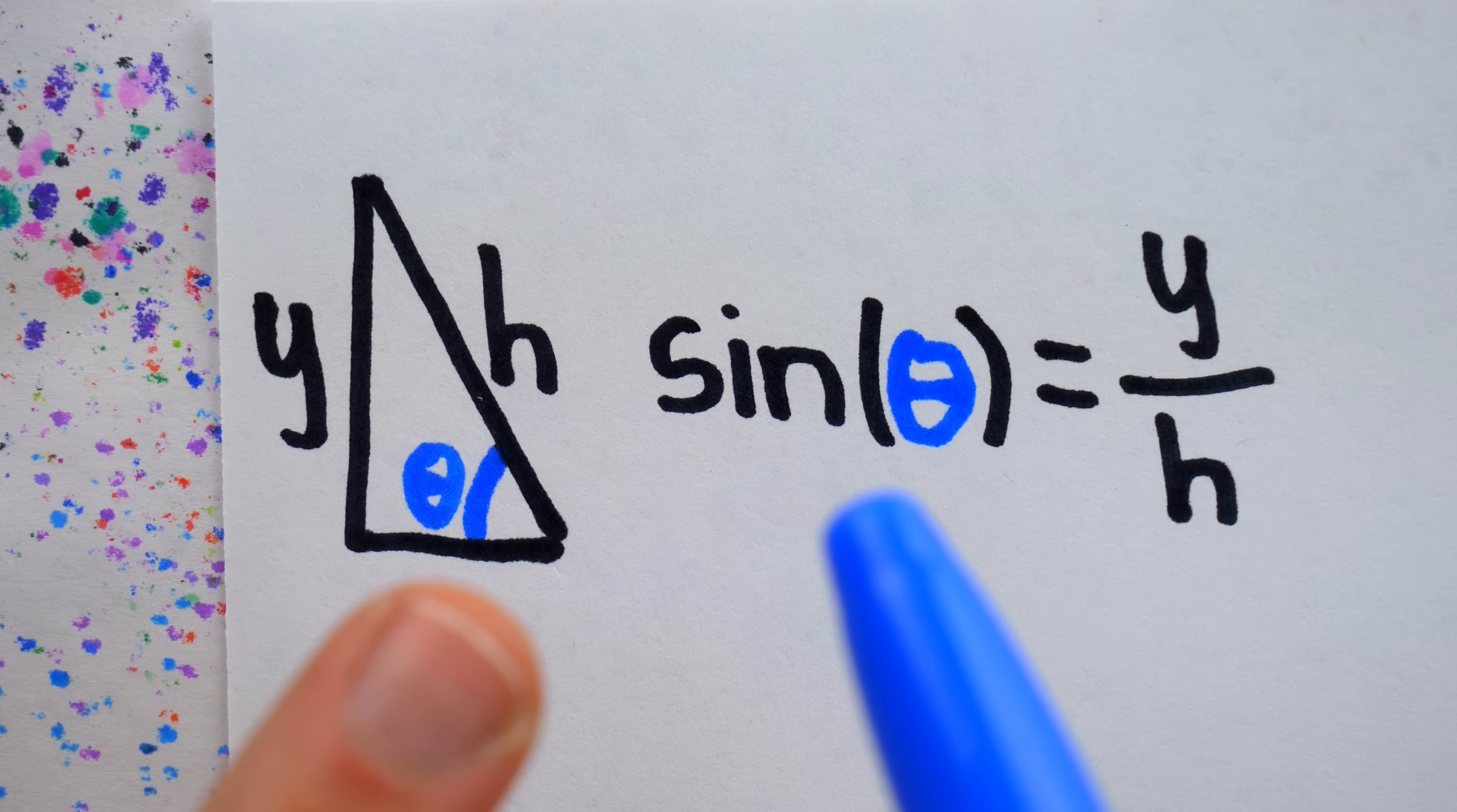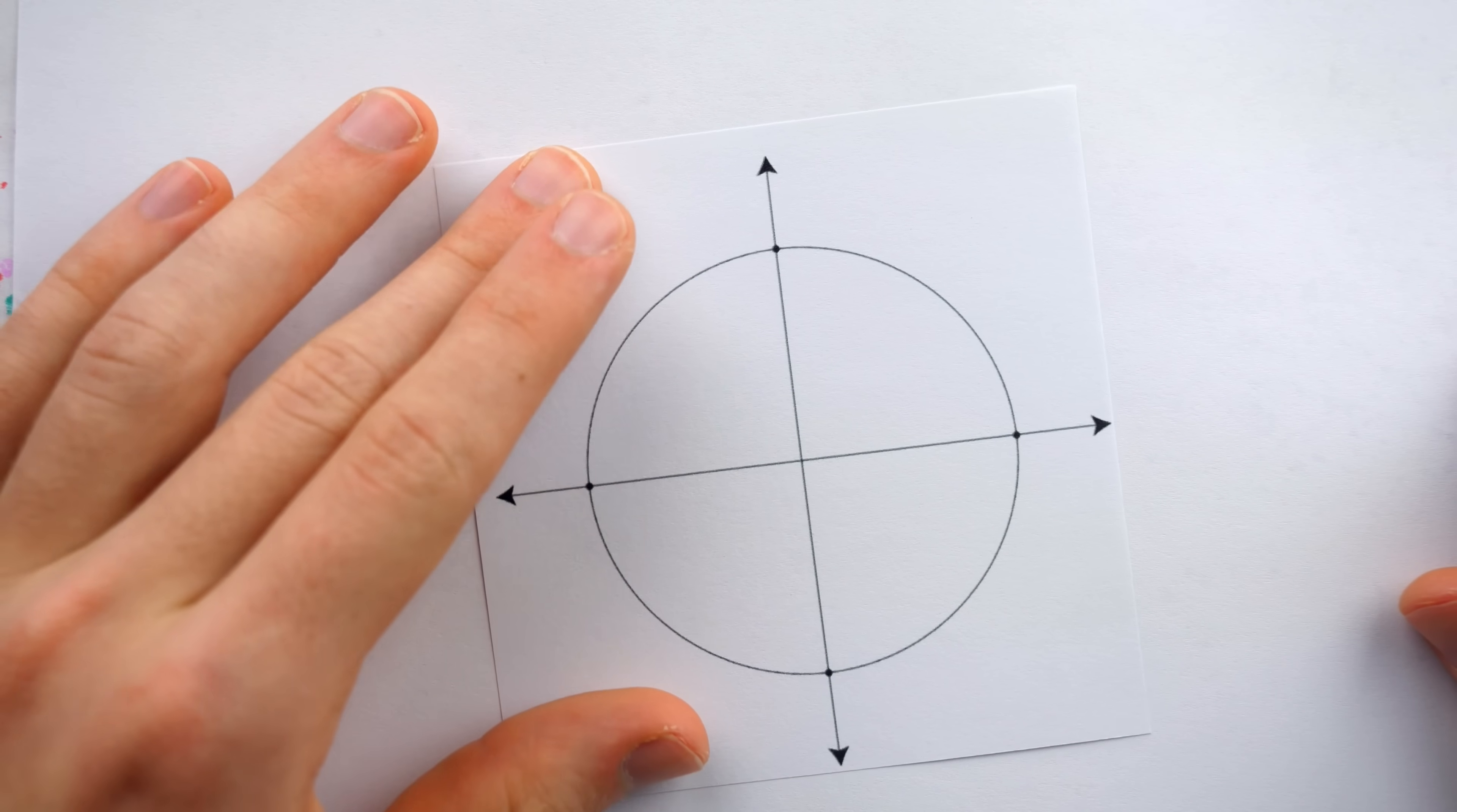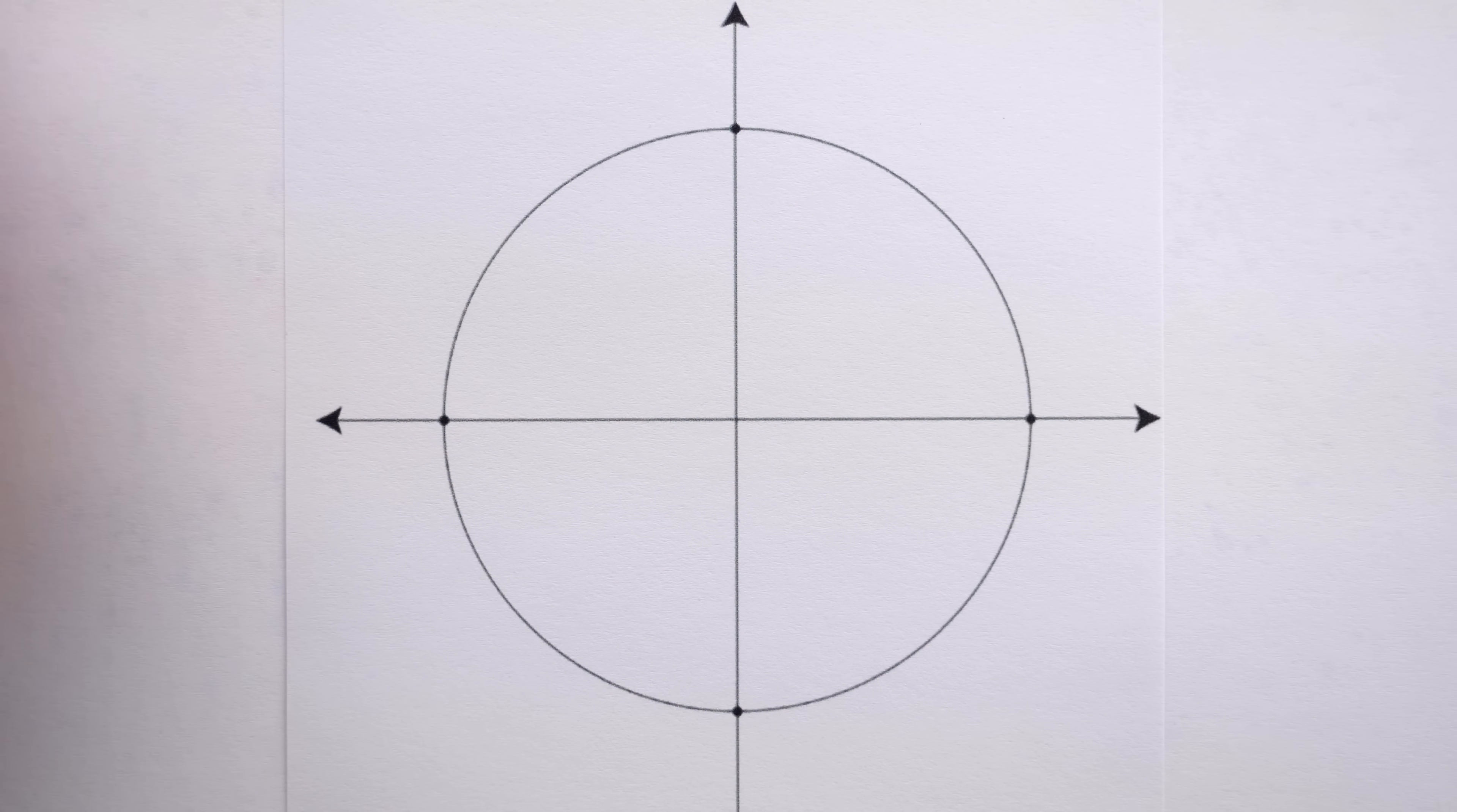But we really need the unit circle definition. This is used to define sine for all real numbers, not just acute angles in right triangles.